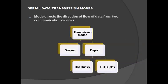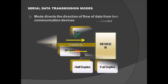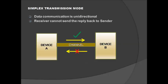The next topic is serial data transmission modes, which describe the direction of data flow between two communicating devices. We have two types: simplex and duplex. Under duplex, there are two further types: half duplex and full duplex. First is simplex transmission mode.